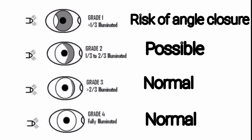In Grade 1, less than one-third of the iris gets illuminated. In Grade 2, one-third to two-thirds of the iris gets illuminated. In Grade 3, greater than two-thirds of the iris gets illuminated. And in Grade 4, we are seeing the fully illuminated iris.